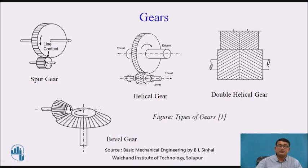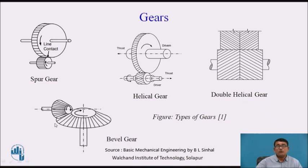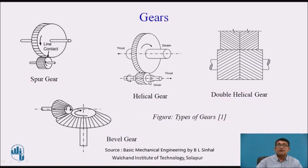Different types of gears include spur gears, helical gears, double helical gears, and bevel gears. In spur gears, the teeth are parallel to the shaft — these are simple gears. In helical gears, the teeth are not parallel; they make a helix angle. Double helical gears have a double helix. In spur, helical, and double helical gears, the driver and driven shafts are on the same plane — horizontal to horizontal. When motion is required from horizontal to vertical or vertical to horizontal, we use bevel gears. For converting rotary motion to reciprocating motion, a rack and pinion arrangement is used.